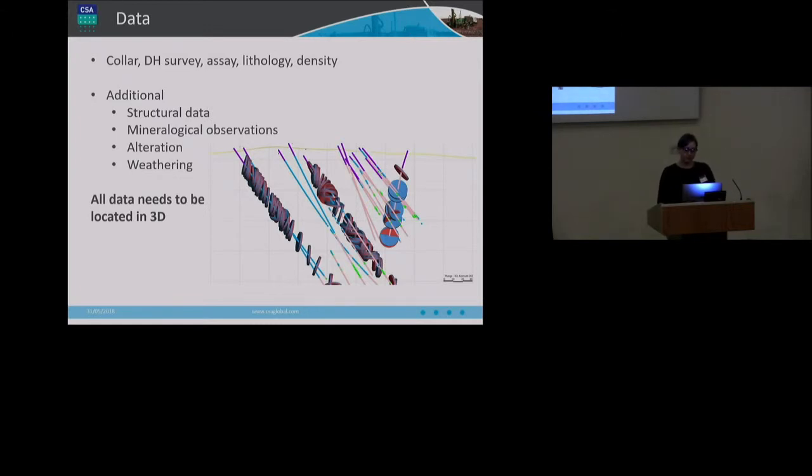As a minimum for drill hole data, be it air core or diamond drilling, collar, downhole survey, assay and lithology information should be collected. It's a common misconception that that's all that's required. Additionally, and in no particular order, you should capture density, structural data, mineralogical observations, alteration styles, weathering styles, and whatever else is important for your deposit, perhaps magnetic susceptibility for iron ore or graphite flake size. Most importantly, all data needs to be located in 3D, be it a downhole lithological contact or a surface-mapped contact.